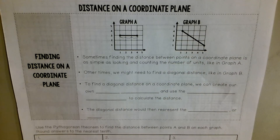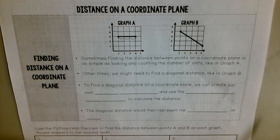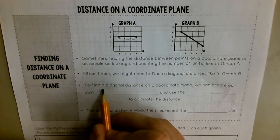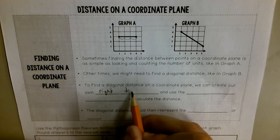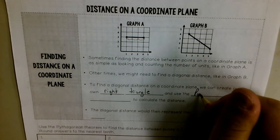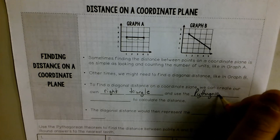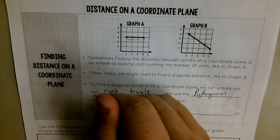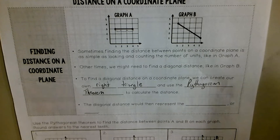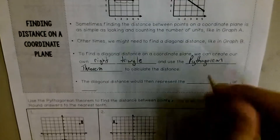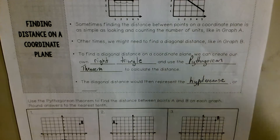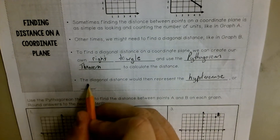We have to use the Pythagorean Theorem. In order to find that, we're going to have to create our own right triangle. Because if we can make a right triangle, we can use the Pythagorean Theorem to solve for that distance. When we solve for that, it's going to be the hypotenuse — the longest side — which is C in our formula.